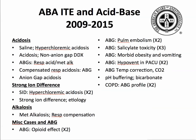Let's look at the ABA in-training exam keywords between 2009 and 2015 related to acid-base disorders. Under acidosis, the first keyword is saline hyperchloremic acidosis — probably a question related to high-volume saline resuscitation, with lots of chloride resulting in this hyperchloremic metabolic acidosis.